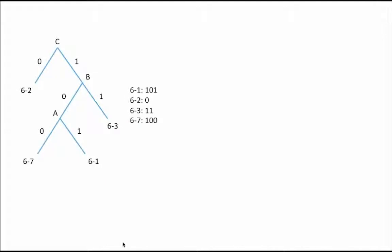We just saw that the encodings resulting from this Huffman encoding tree are 1-0-1 for Major 6-1, a 0 for Major 6-2, 1-1 for Major 6-3, and 1-0-0 for Major 6-7. Note that the Huffman encoding tree for this problem could have also been drawn like this. These two trees are identical in structure and result in the same encodings for the four Majors.